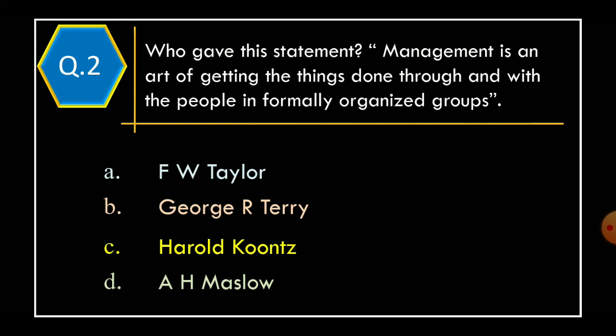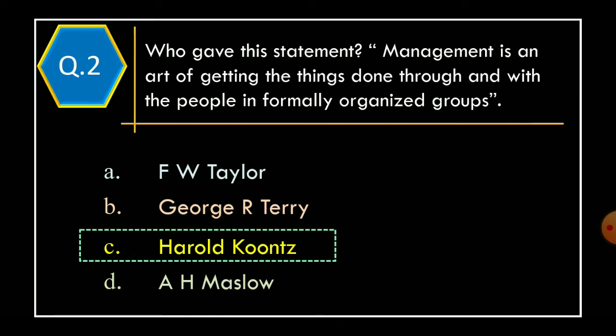Question 2. Who gave this statement? 'Management is an art of getting the things done through and with the people in formally organized groups.' Option A: FW Taylor. Option B: George R. Terry. Option C: Harold Koontz. Option D: A.H. Maslow. The correct option is Option C: Harold Koontz.